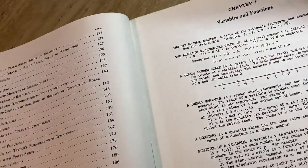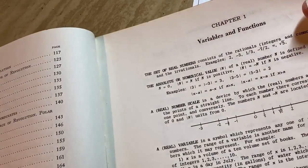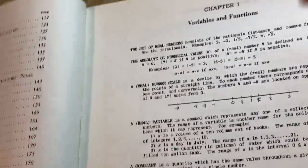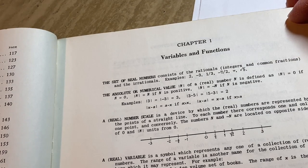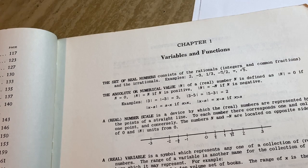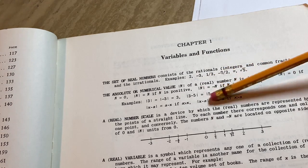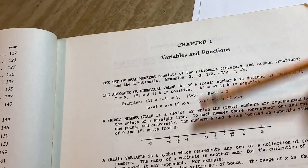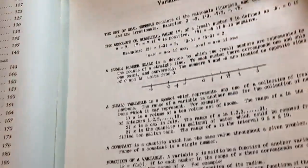And the typesetting is a little bit interesting because it's an older book. I don't know if it's the same on newer books, but here's how it starts. Let's just read it together. It says a set of real numbers consist of the rationals, integers, and common fractions, and irrationals. Examples are 2, negative 3, 1 third, negative 7 halves, pi, and square root of 5. Then here they have the absolute or numerical value. They have an absolute value of a real number n is defined as, and they define it here. And it just starts from the very beginning, right? Like just from not knowing anything. And it builds you up. And then you have examples.